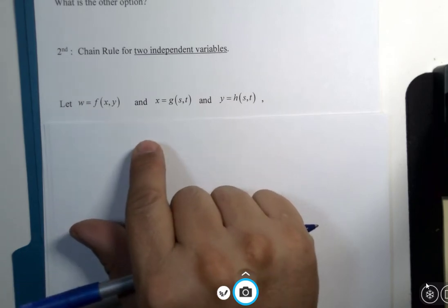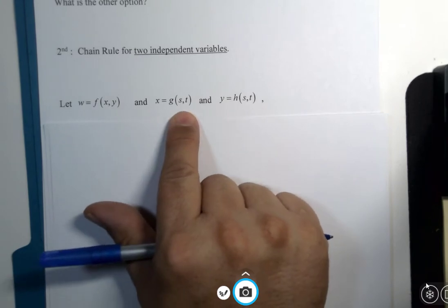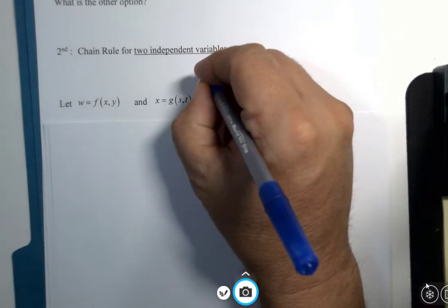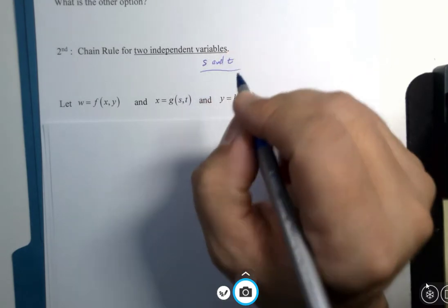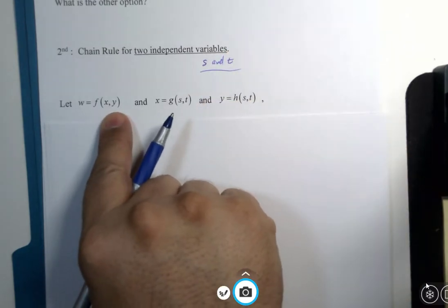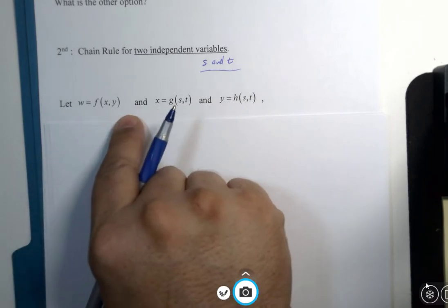But what is important is that we're going to replace x and y with two other variables. They could be s and t, they don't have to be, they just need to be two variables that aren't necessarily x and y. So we're going to trade two for two in this case.